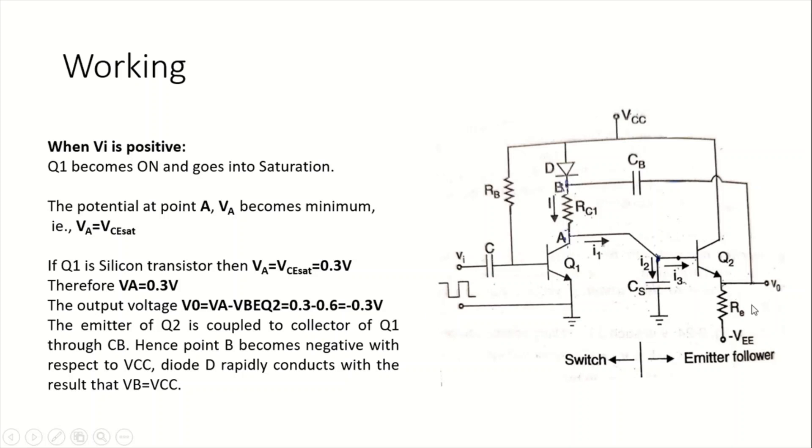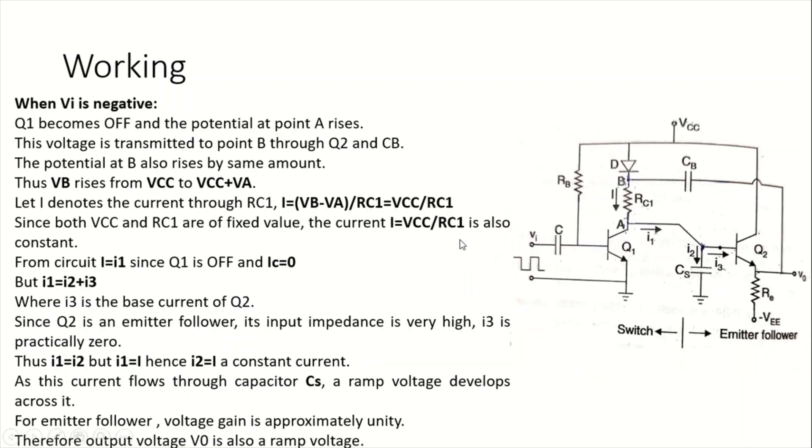What happens when this circuit takes a negative input signal? When the input signal is negative, this transistor Q1 turns OFF. When this transistor turns OFF, we find a maximum potential at point A. The potential at point A, which previously was VCsat, now rises. This voltage is transmitted to point B through transistor Q2 and through capacitor CB.